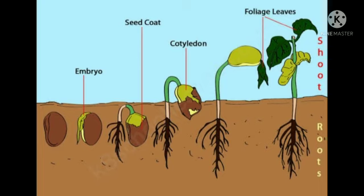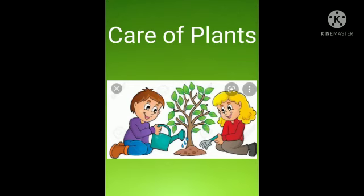Our next topic is germination. The growth of a seed into a seedling or baby plant is called germination. The essential conditions for germination are a proper amount of air, water, and warmth. The seed absorbs water from the soil and increases in size; the seed coat breaks open and a root grows downward. The first root to grow is called the radicle, and the shoot is called the plumule.